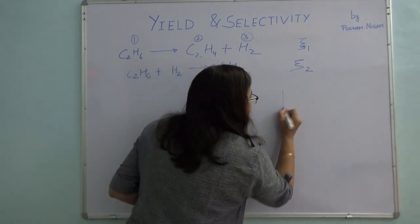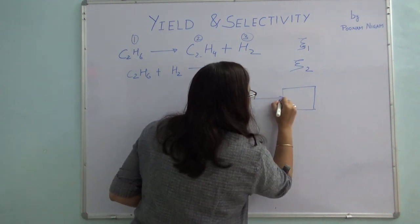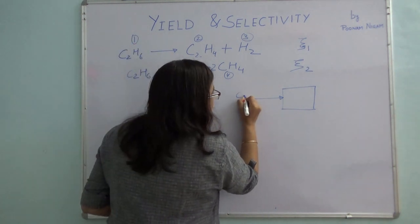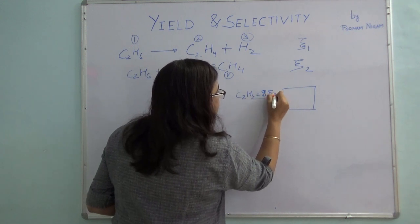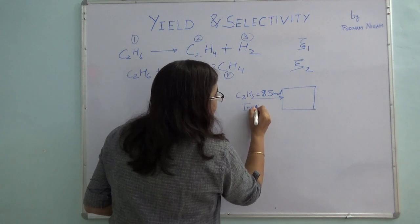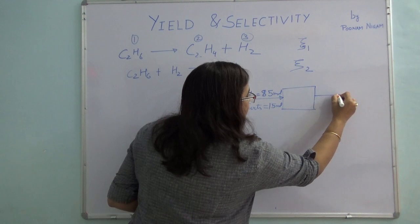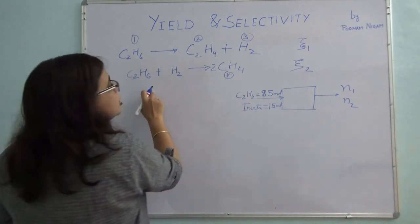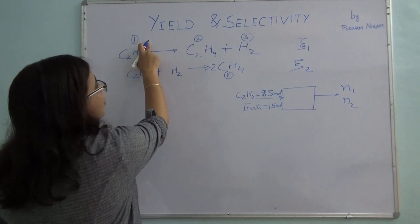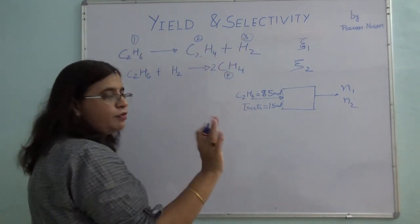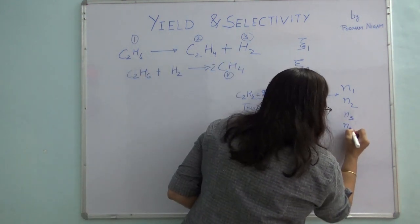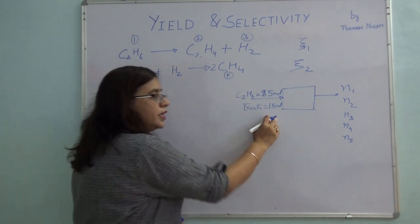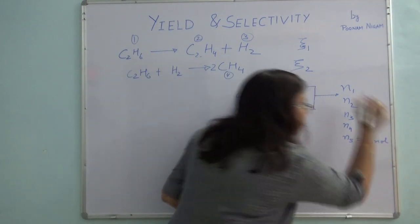Let's put some numerical values. Say I have a reactor where I am putting in 100 moles of feed. My ethane is 85%, so ethane is 85 moles and the remaining are inerts — 15 moles. It has been asked to find the product composition, given that both reactions are taking place. I have components 1, 2, 3, 4, and inerts as the 5th component. Inerts don't take part in the reaction, so whatever goes in comes out — inerts are 15 moles.